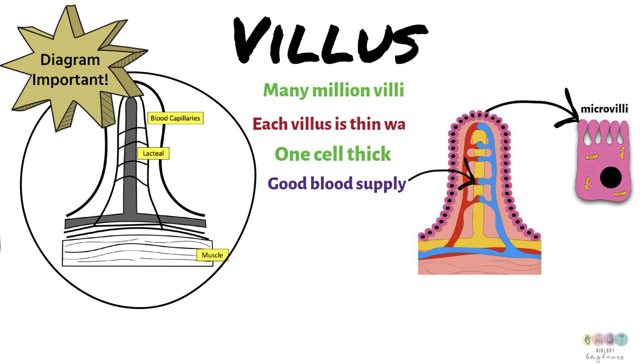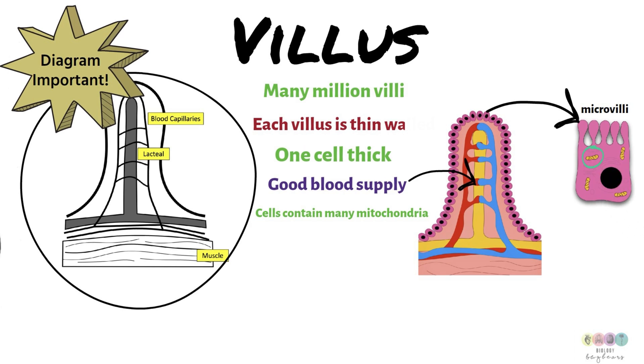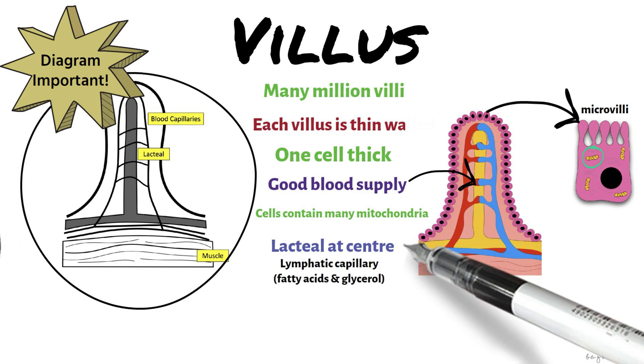Each villus has a good blood supply. So this allows for a rapid diffusion of molecules into the blood. The cells that make up each of the villi, they have many mitochondria, which is very important for the production of ATP required for active transport. At the centre of each villus is a lacteal, a lymphatic capillary. And this is where the products of fat digestion are absorbed into the lymphatic system.